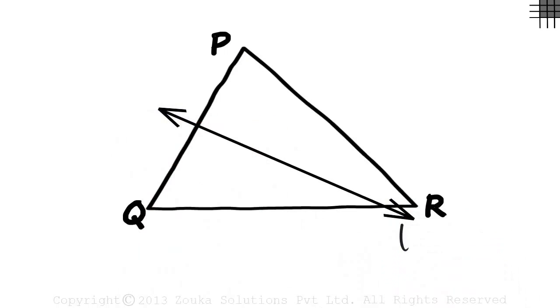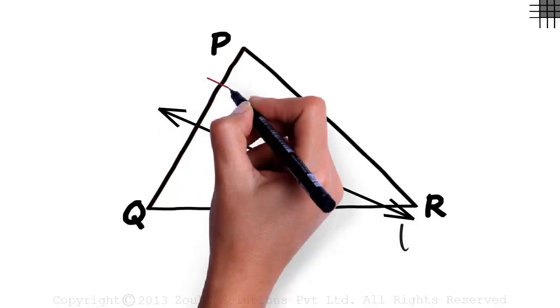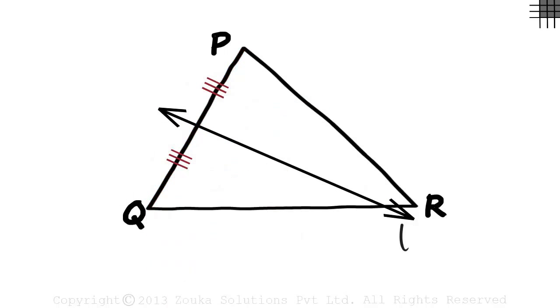Let line L be the perpendicular bisector of segment PQ. These two sides will be equal and this will be a right angle. Let line M be the perpendicular bisector of side QR. That will make these two sides equal and this angle a right angle.